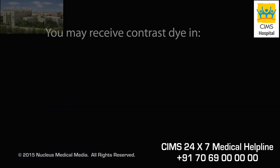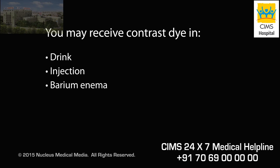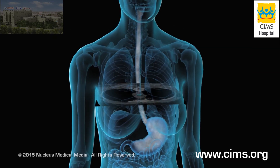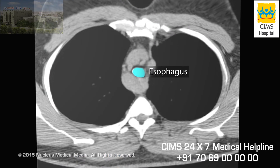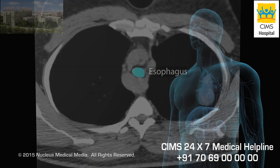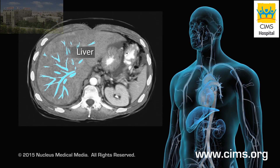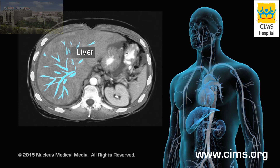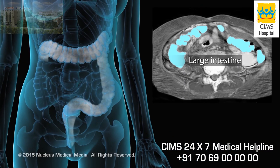In some cases, you may receive contrast dye before your procedure in a drink, an injection, or a barium enema to make it easier for your doctor to see certain areas of your body. If you received a drink with contrast dye, your esophagus or stomach will be highlighted. If you received an injection, your blood vessels, gallbladder, liver, or urinary tract will be highlighted. If you received a barium enema, your large intestine will be highlighted.